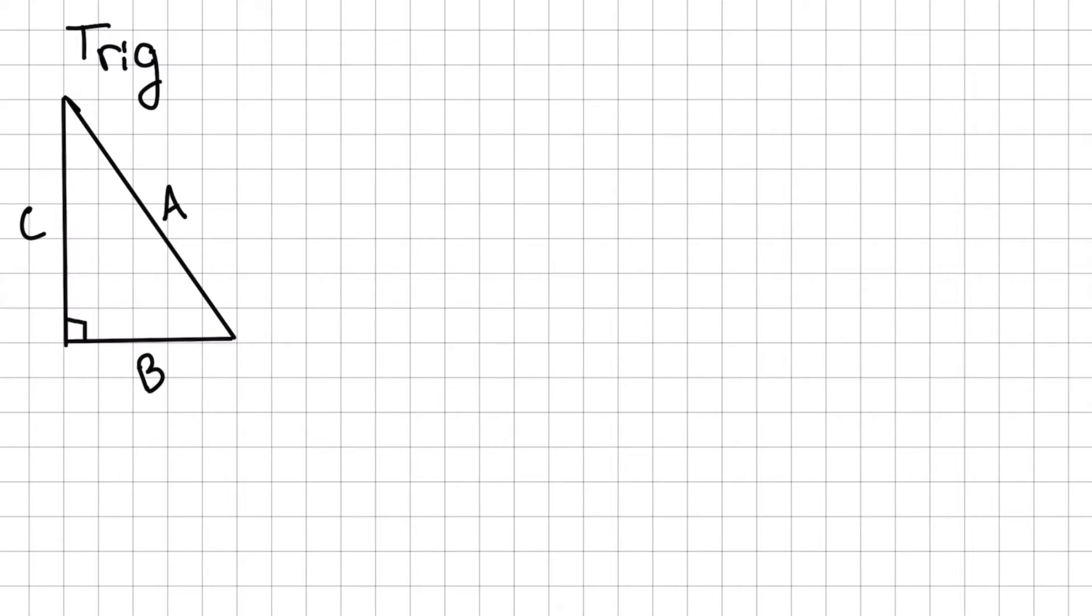This right angle is what we would call opposite of side A, and so I'm going to name this angle little a. Side B is opposite of this angle here, which I will call little b. Finally, this angle is little c.